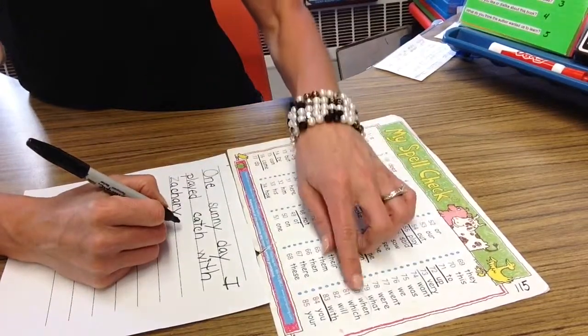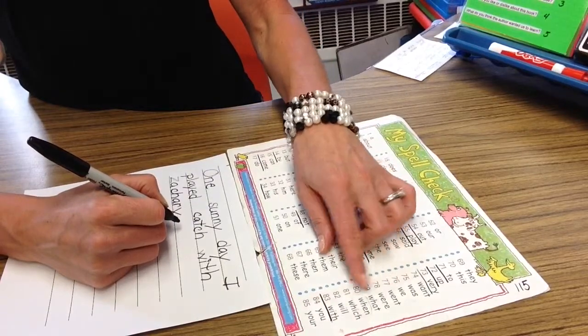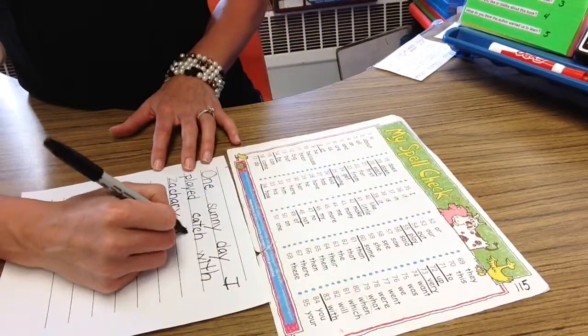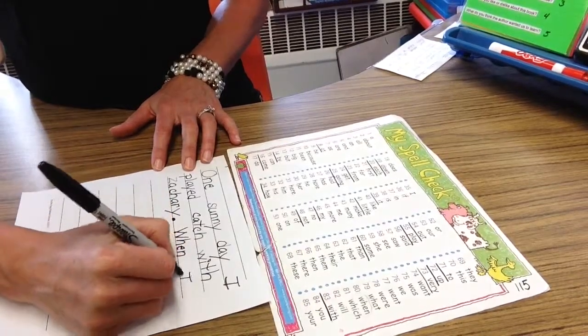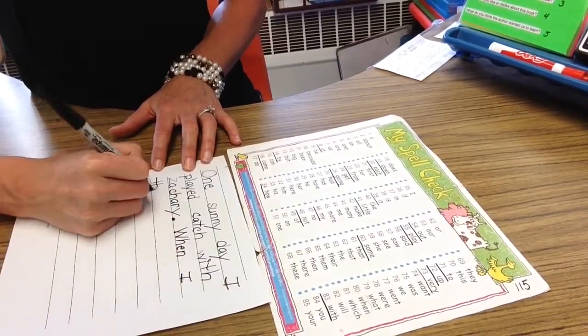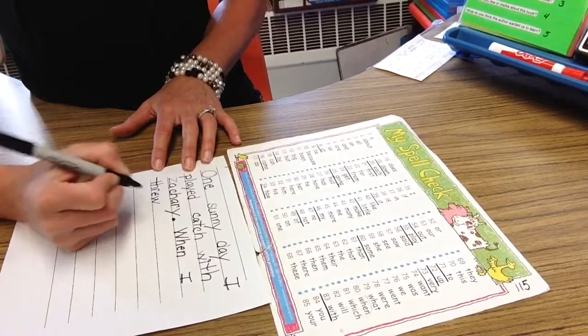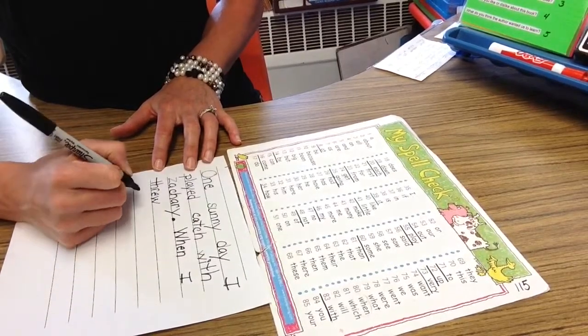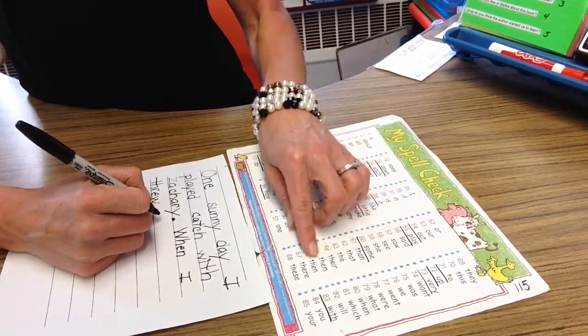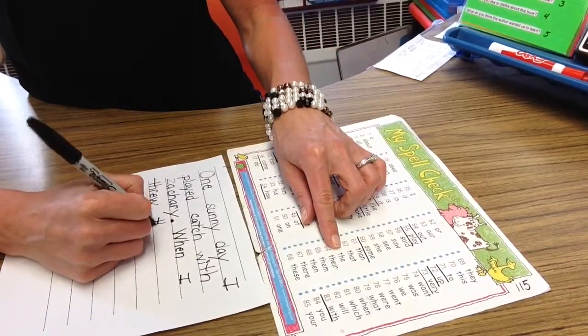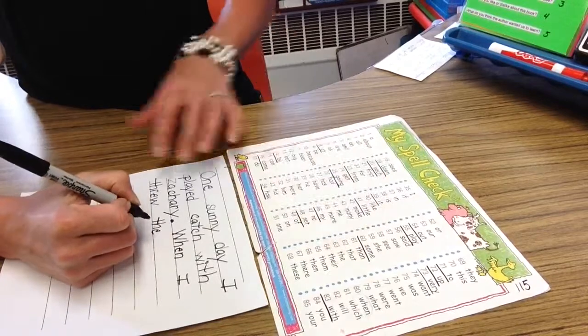When, that's a word that writers use a lot. It's in the W's. Here it is. W-H-E-N. When I threw, that's not a word writers use a lot so I'm going to spell it the best I can. The, the. That starts with a T so I've got to find it here in the T's and spell it correctly because it's a word wall word.